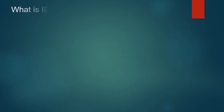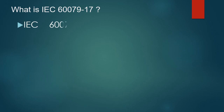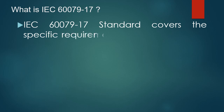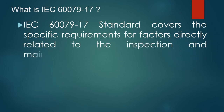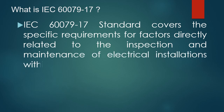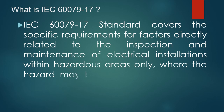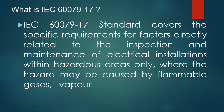What is IEC 60079 Part 17 standard? The standard IEC 60079 Part 17 covers the specific requirements for factors directly related to the inspection and maintenance of electrical installations within the hazardous area, only where the hazards may be caused by flammable gases, vapors, mist, dust, fibers, or flyings.